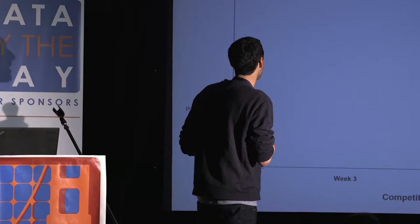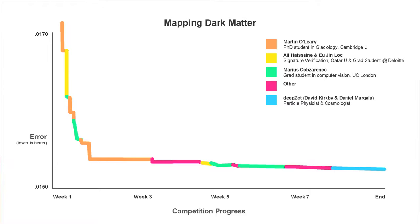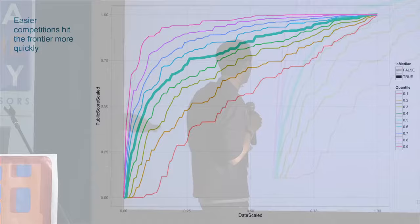He doesn't stay pleased for very long, because what happens is then somebody passes him, and then Martin passes them, and they pass him, and he passes them. Eventually you get to the point where nobody is able to get any more improvements — there's only so much signal in a dataset, and you reach the point where you've really extracted all the signal out. That's one of the things that competitions are very powerful for.